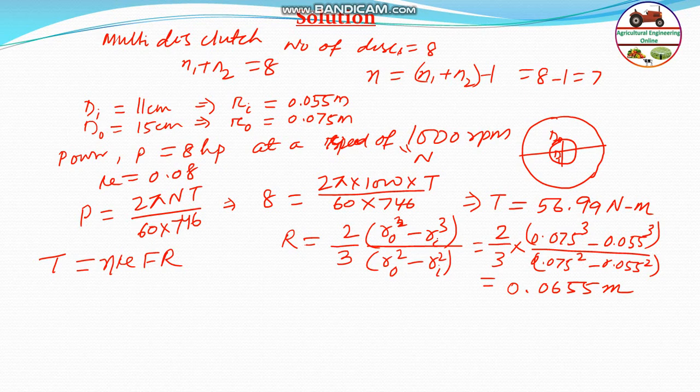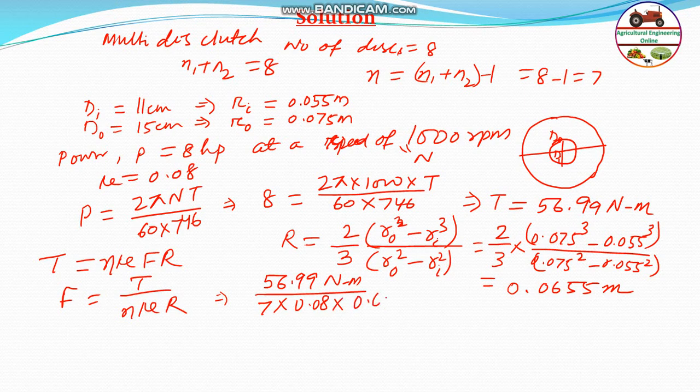Once R is found, everything is known except F. Therefore, F = T/(n × μ × R). Substituting: F = 56.99/(7 × 0.08 × 0.0655), where the meter units cancel out leaving newtons.